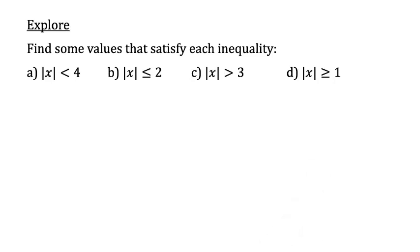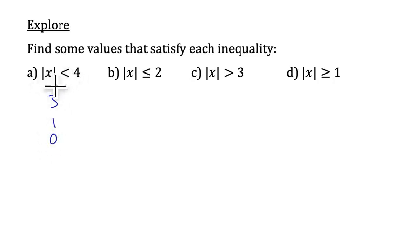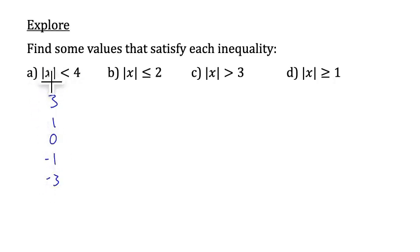Let's dive in with a little exploration. We're going to find some values that satisfy each of these inequalities. For instance, if x equals 3, that would satisfy this inequality because the absolute value of 3 is less than 4. Numbers like 1 and 0 are certainly less than 4. And some negative numbers also work — the absolute value of negative 3 is positive 3, so that's less than 4.